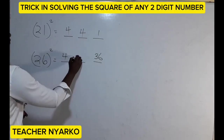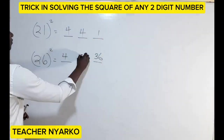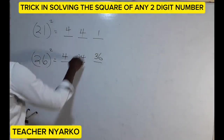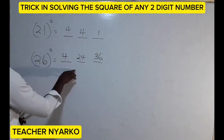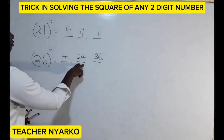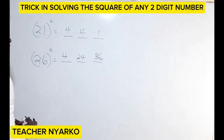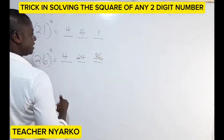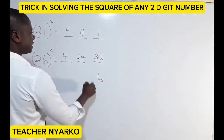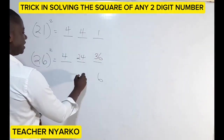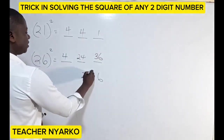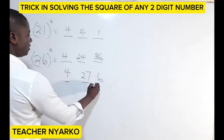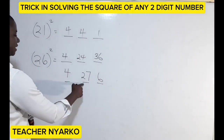Now you are supposed to get single digits on each line. Here we have double digits, so we need to simplify. The single digit we keep is six, then we add the three to the next column, giving us 27, and we are left with four.